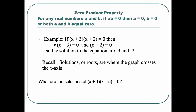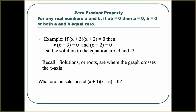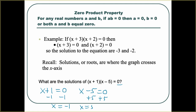It asks: what are the solutions of x plus 1 times x minus 5 equals zero? We set these two factors equal to zero. If either factor is zero, the whole thing is zero. We set x plus 1 equal to zero — x is negative 1. We set x minus 5 equal to zero — x is 5. Those are our two solutions, our roots, our zeros. This is where the graph would cross the x-axis. We can solve without graphing, using algebra.